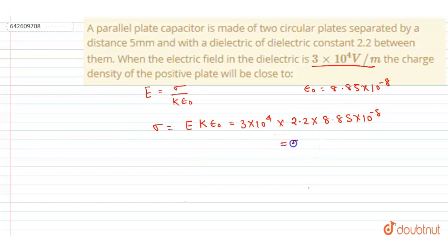multiplying the three, you will get 5.841 × 10^-7, so that will be nearly equals to 6 × 10^-7 coulomb per meter square. And this will be our answer. Simple!